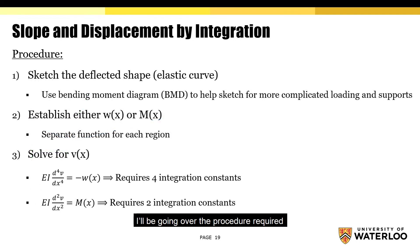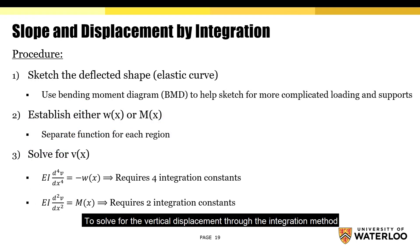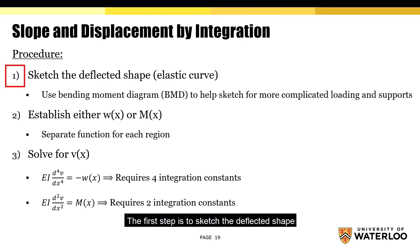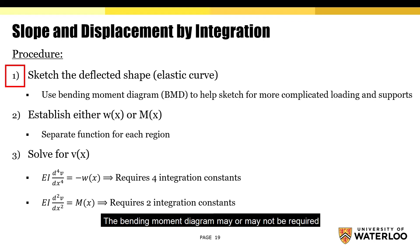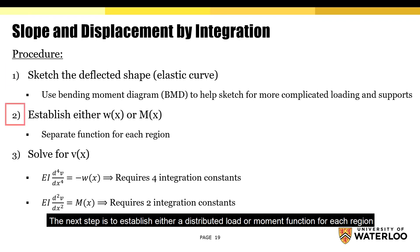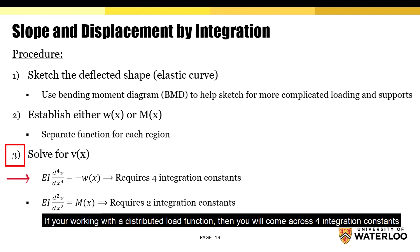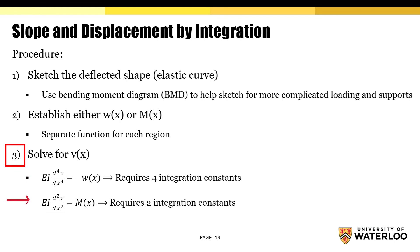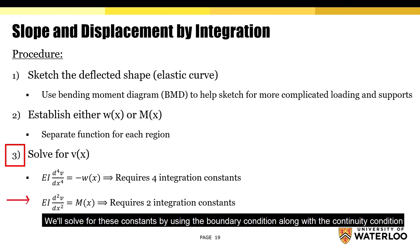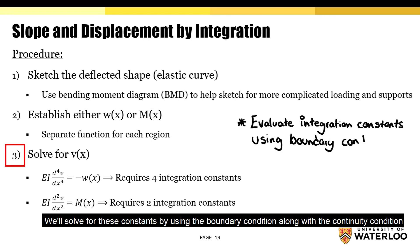On this slide, I'll go over the procedure required to solve for the vertical displacement through the integration method. The first step is to sketch the deflected shape — depending on the complexity of the beam, the bending moment diagram may or may not be required. The next step is to establish either a distributed load or a moment function for each region. The third and final step is to solve for the vertical deflection. If you're working with a distributed load function, you'll come across four integration constants; if you're dealing with the moment function, you'll come across two. We'll solve for these constants using the boundary condition along with the continuity condition.